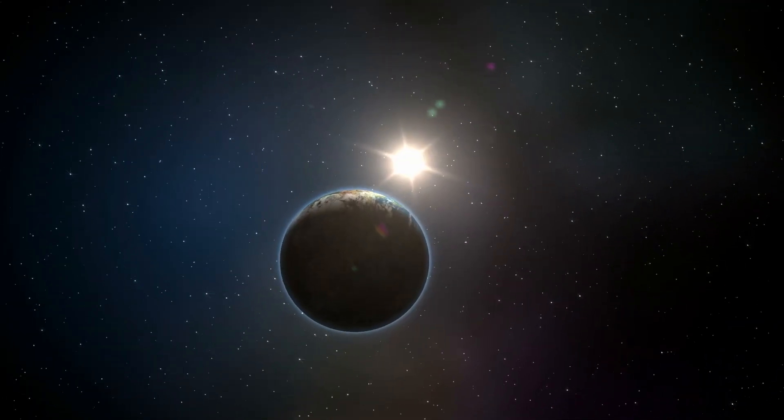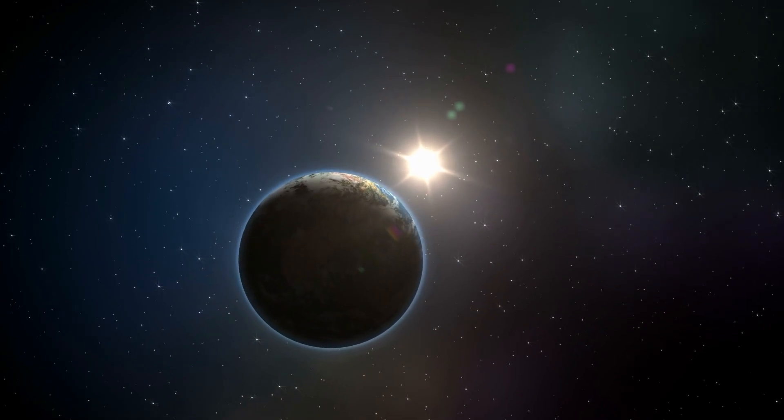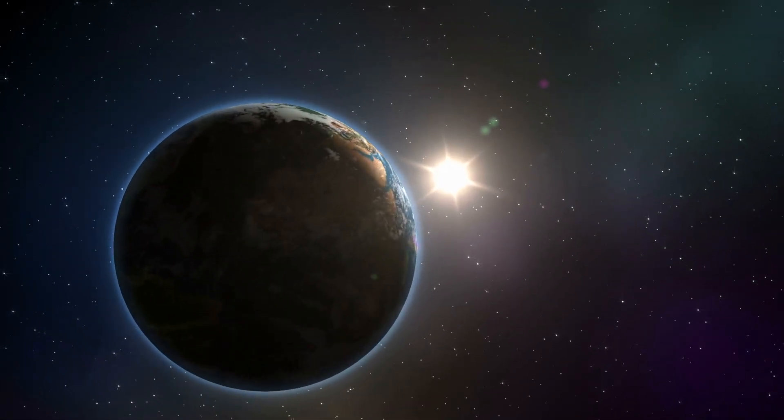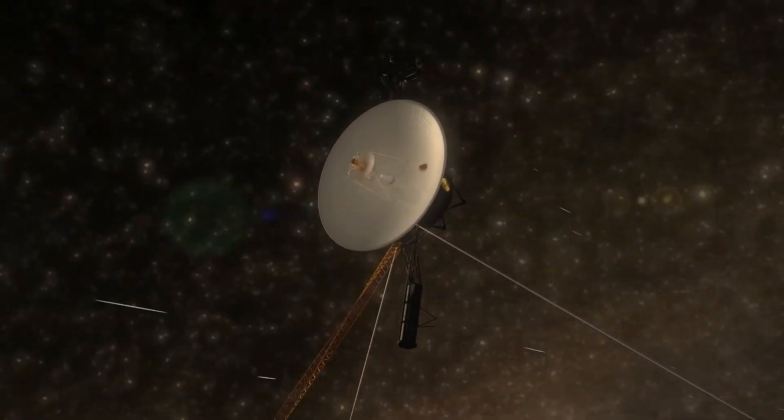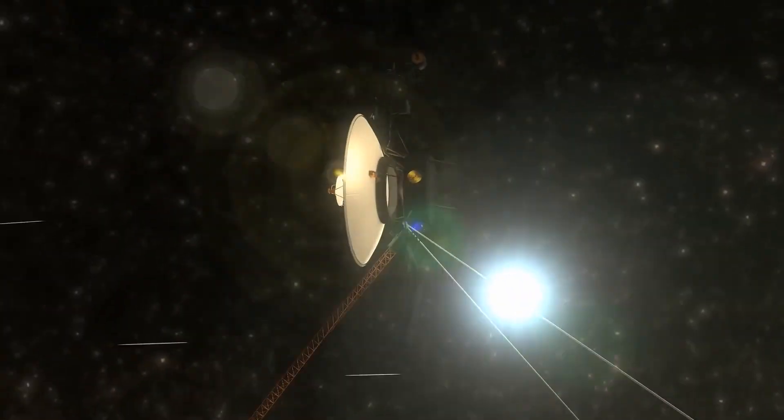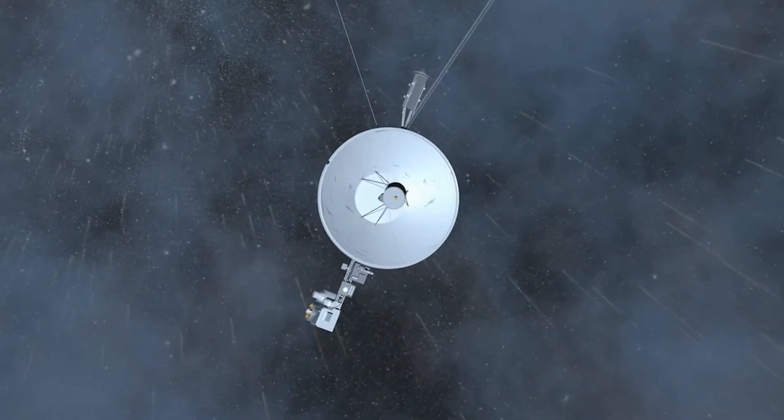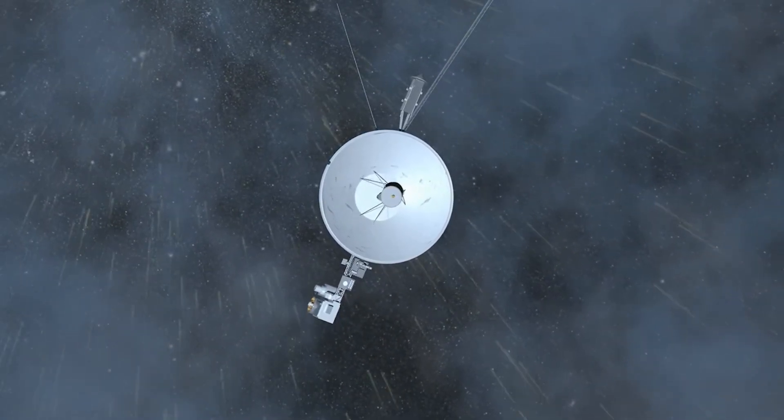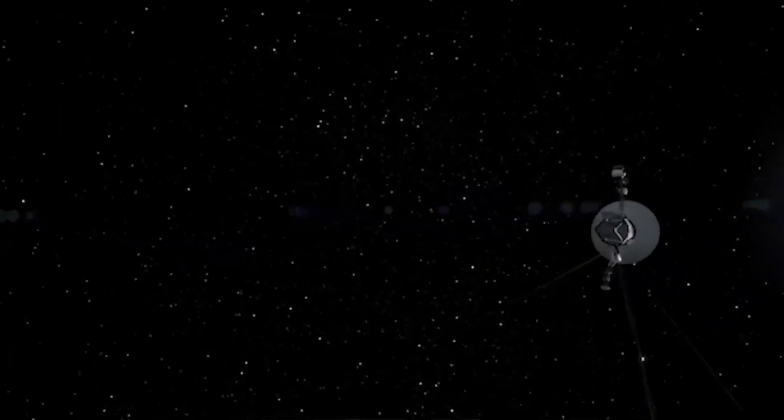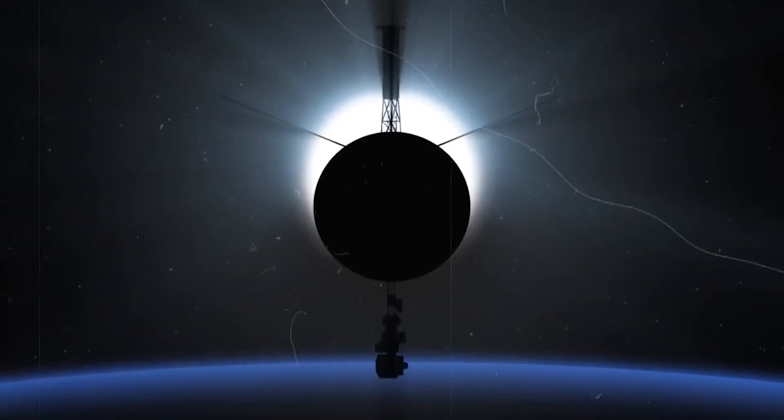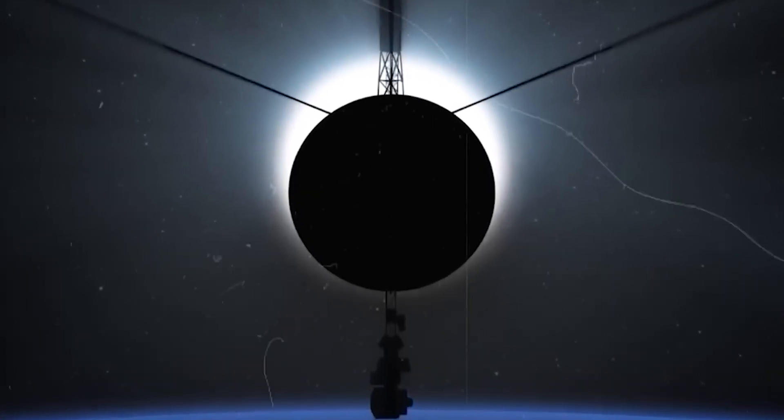For those unfamiliar with the specifics, Earth hurtles through space at a breakneck speed of 67,000 miles per hour. In contrast, Voyager 1 can attain speeds of 38,210 miles per hour, surpassing the velocity of Voyager 2, which reaches approximately 35,000 miles per hour. Consequently, during those months when it appears that Earth draws remarkably close to the probe, Earth is approaching the probe at a rate too rapid for the spacecraft to escape.